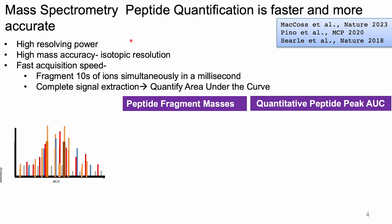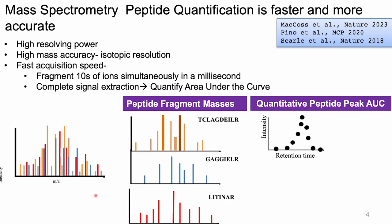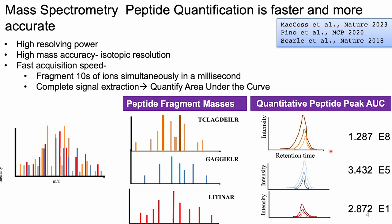The latest generation of mass spectrometers combines extremely high resolving power, higher mass accuracy, and very high acquisition speeds. Recent methods in the McCoss lab at the University of Washington allow us to fragment multiple ions simultaneously, which decreases the chance of data loss. Using these complex spectra, we can complete a signal extraction to then ID the peptides and quantify them using area under the curve. That provides us with a very wide dynamic range, capturing peptides present at low abundances and very high abundances.